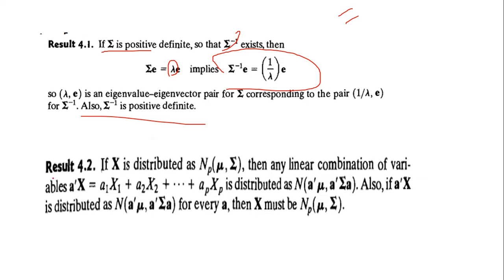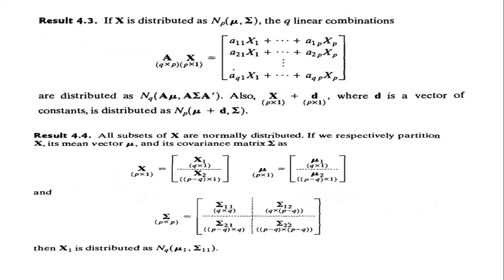For the linear combination result: if x is distributed as normal with p components, mean mu and covariance sigma, then any linear combination a'x = a1*x1 + a2*x2 + ... + ap*xp is distributed as normal with mean a'mu and variance a'*sigma*a. This is because E(ax) = a*E(x), and for the dispersion matrix, because of the order requirement, we take a', then sigma, then a. If a'x is distributed as normal with mean a'mu and variance a'*sigma*a for every a, then x would be N(mu, sigma).